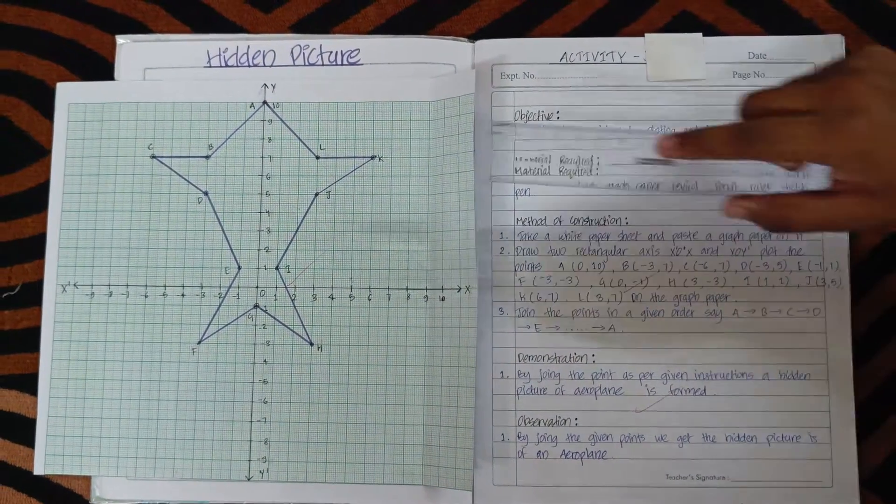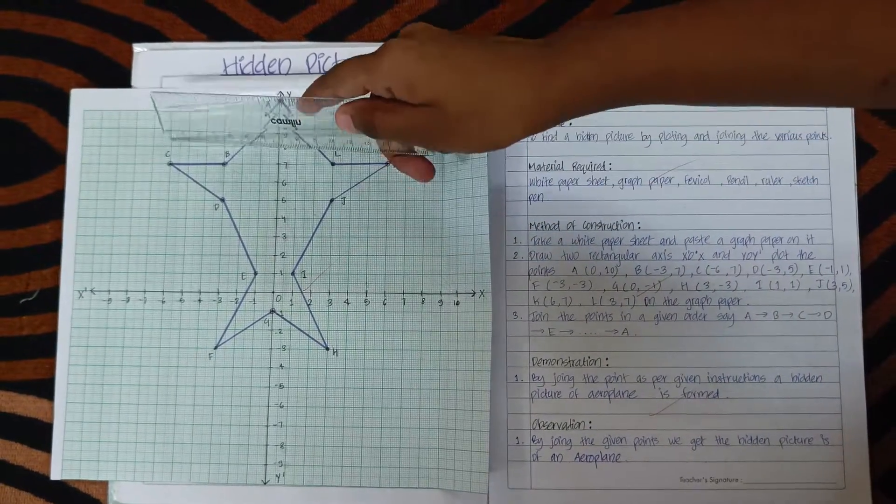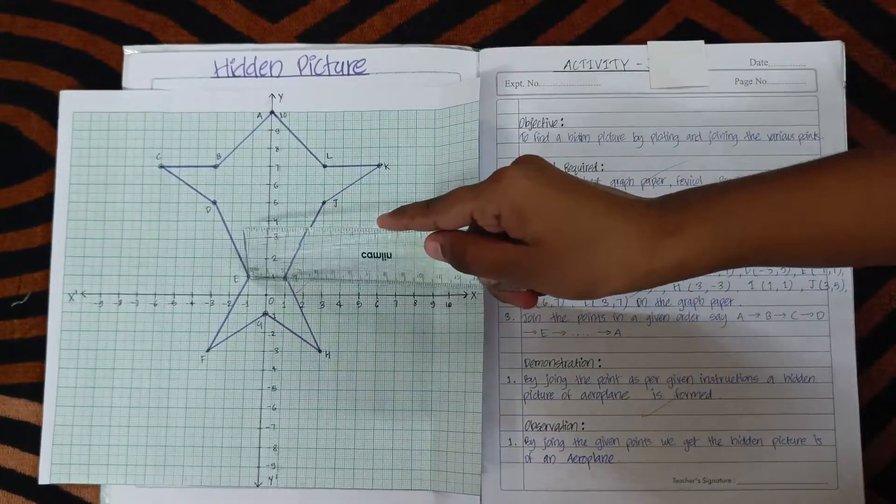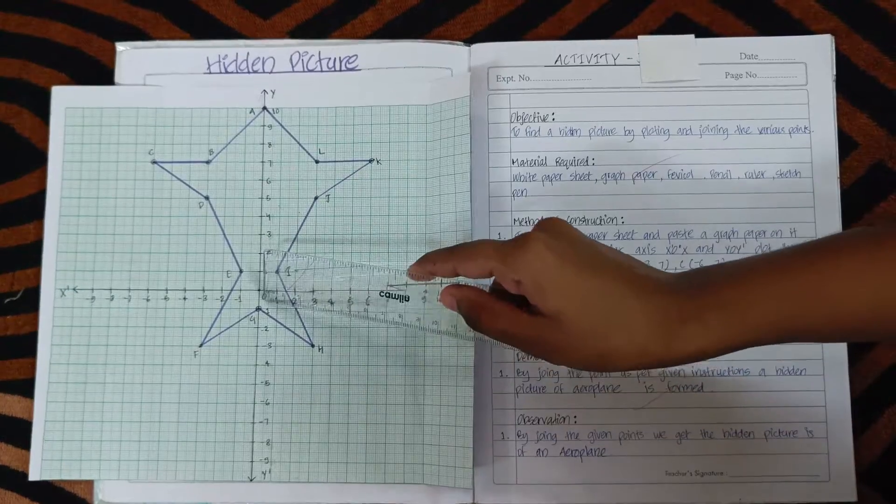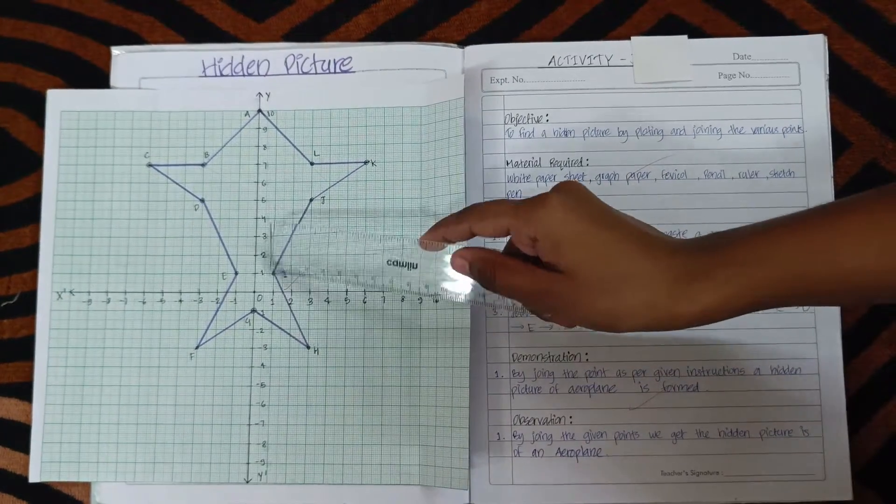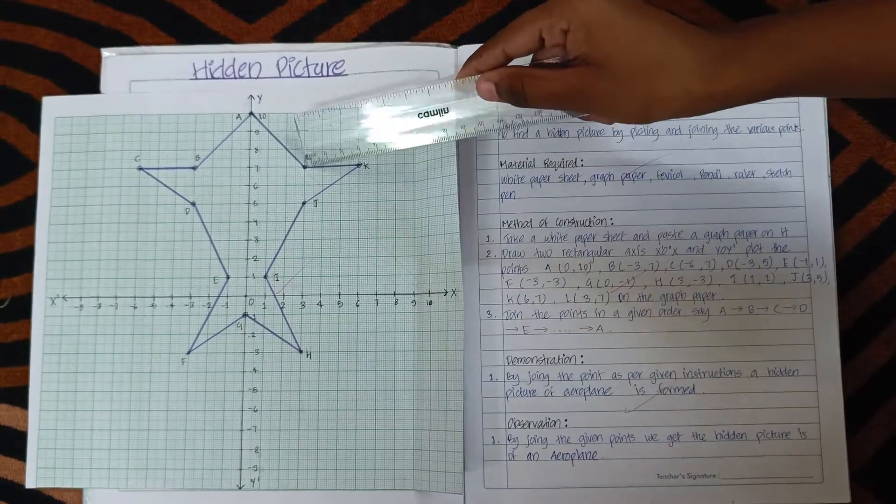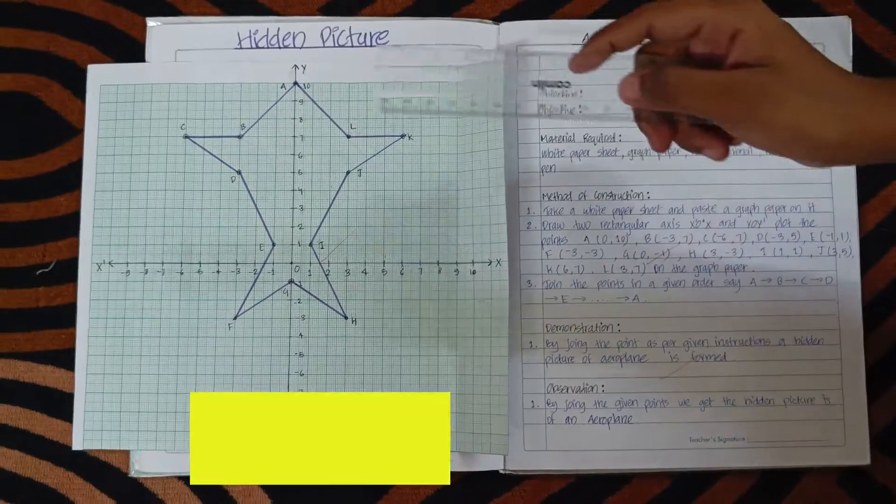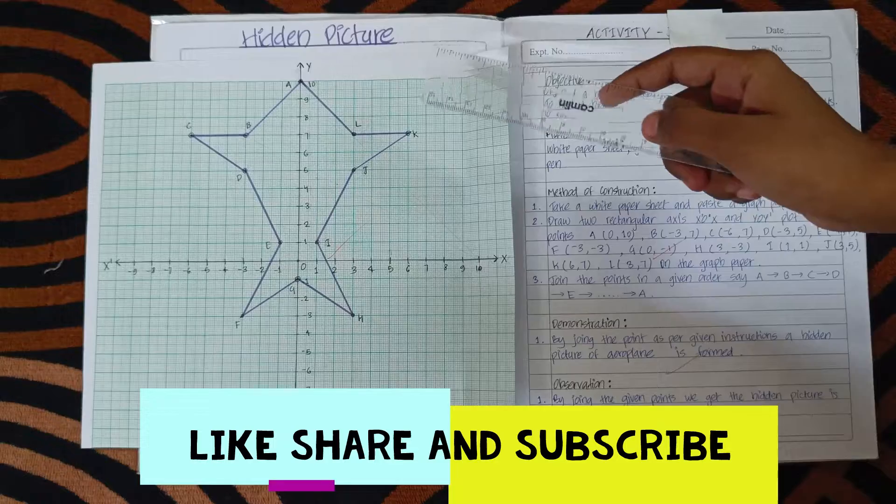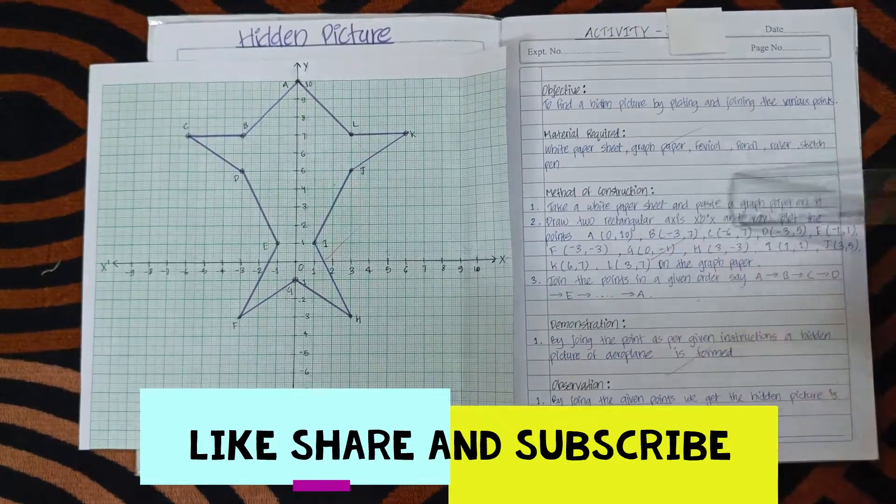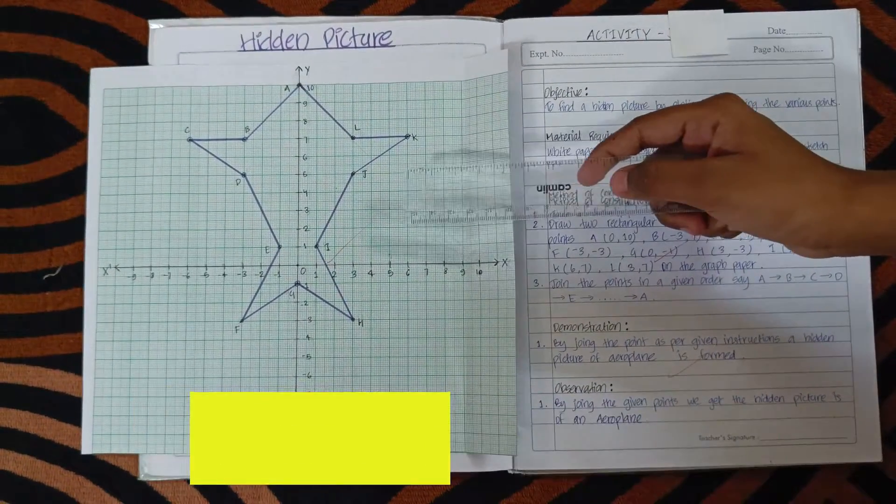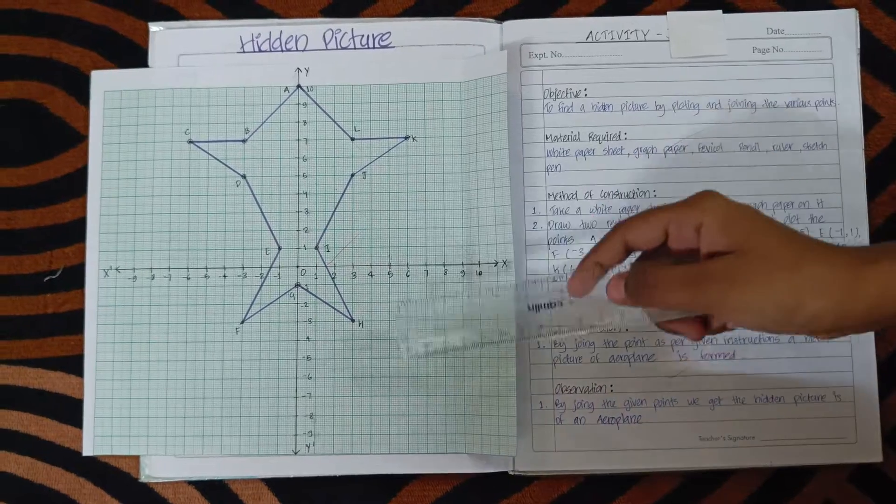Now we can observe that by joining the given points in the graph, we obtain a hidden picture which is of an arrowhead.